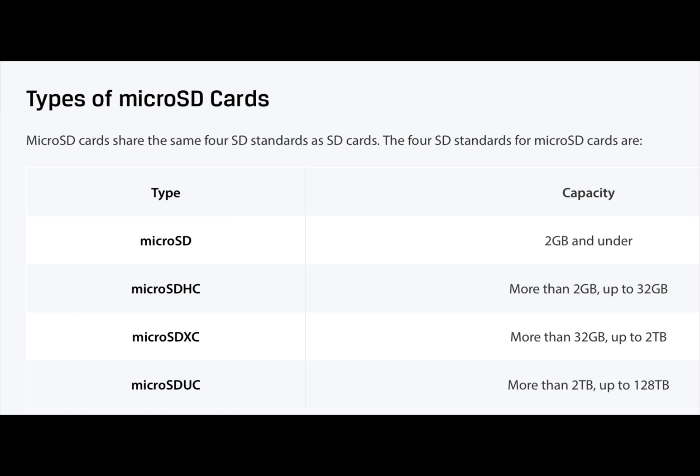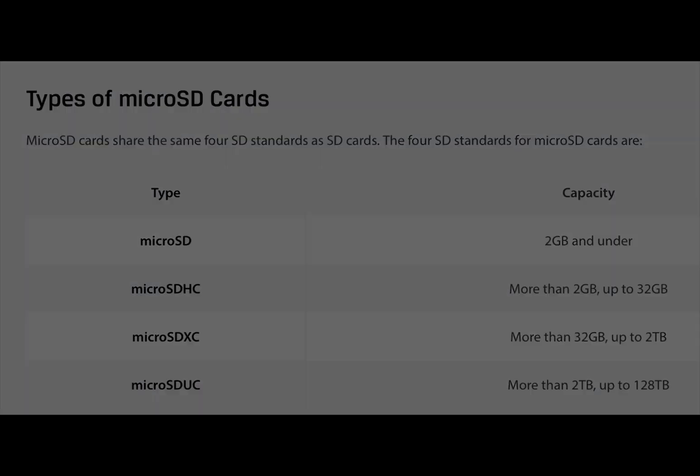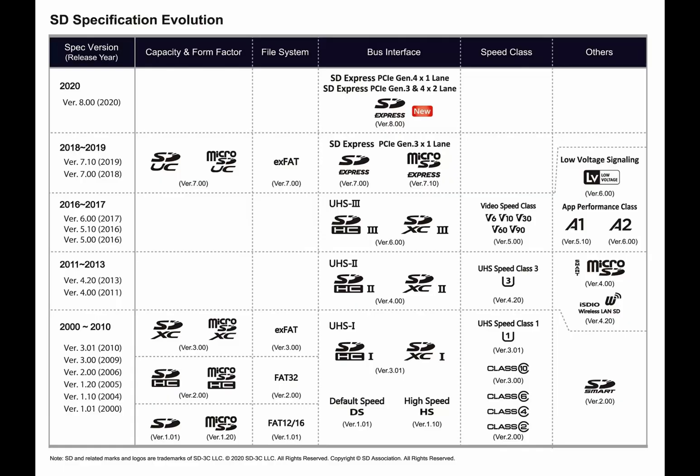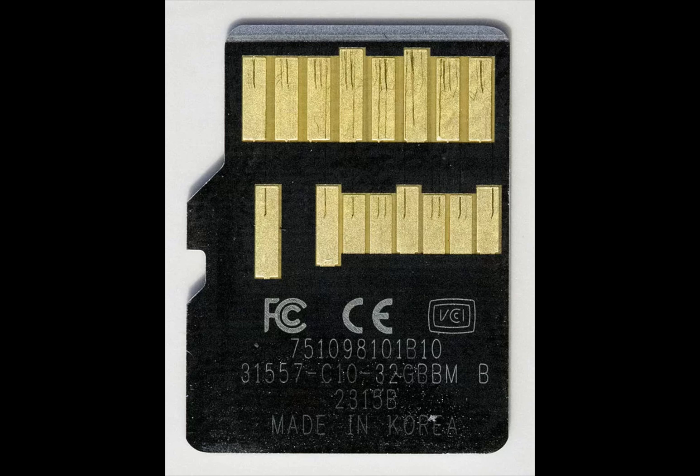There are four types of micro SD cards using the same standards: micro SD, micro SDHC, micro SDXC, and micro SDUC, as shown in the diagram here. The next diagram shows the evolution of SD cards — the left column shows dates from 2000 all the way up to 2020, and the different kinds of cards they've had over the years.